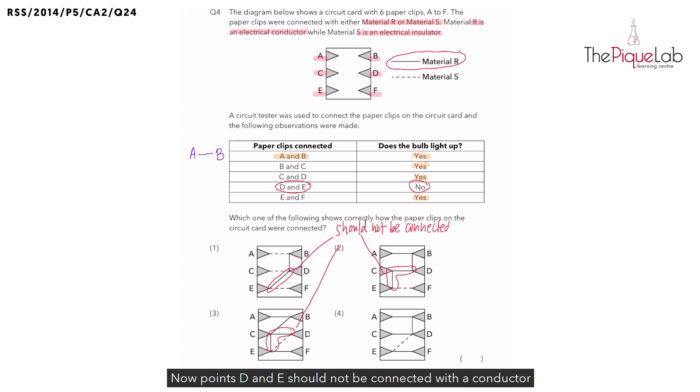Now points D and E should not be connected with a conductor of electricity as the bulb did not light up. Immediately, we have eliminated three options: options 1, 2 and 3. So we know our answer is option 4.